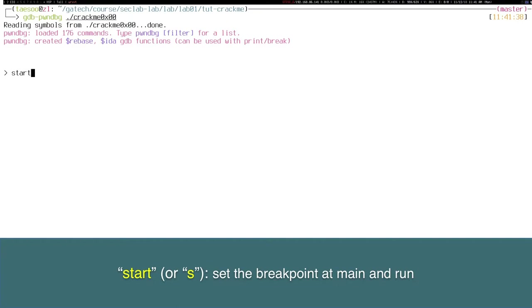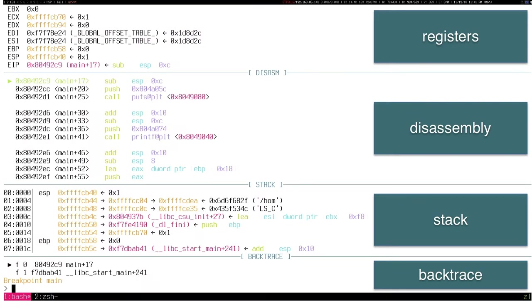For example, if you type start, it runs the program but conveniently stops at the main function. When stopped, it displays a few useful contexts about the current execution, such as registers, instructions, stack, and backtrace with annotated information.